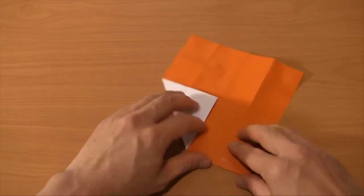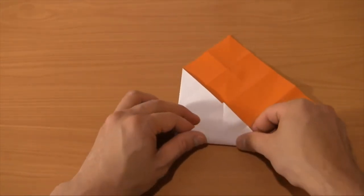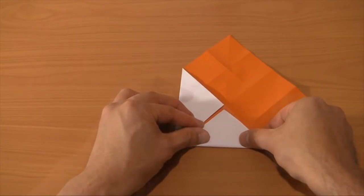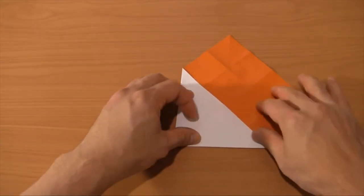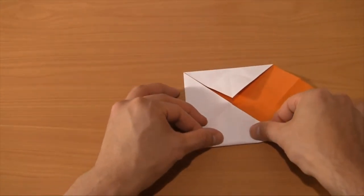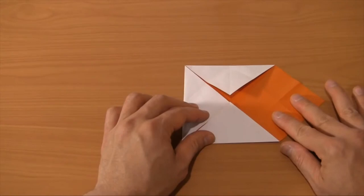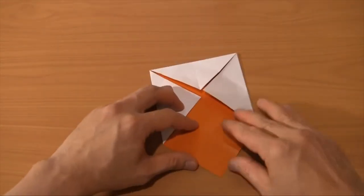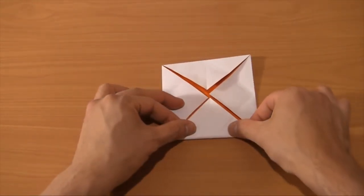Keep that folded and then turn the other one in just like you're making a paper airplane. Over and fold in just like so. And then the last flap that comes over into a square shape.